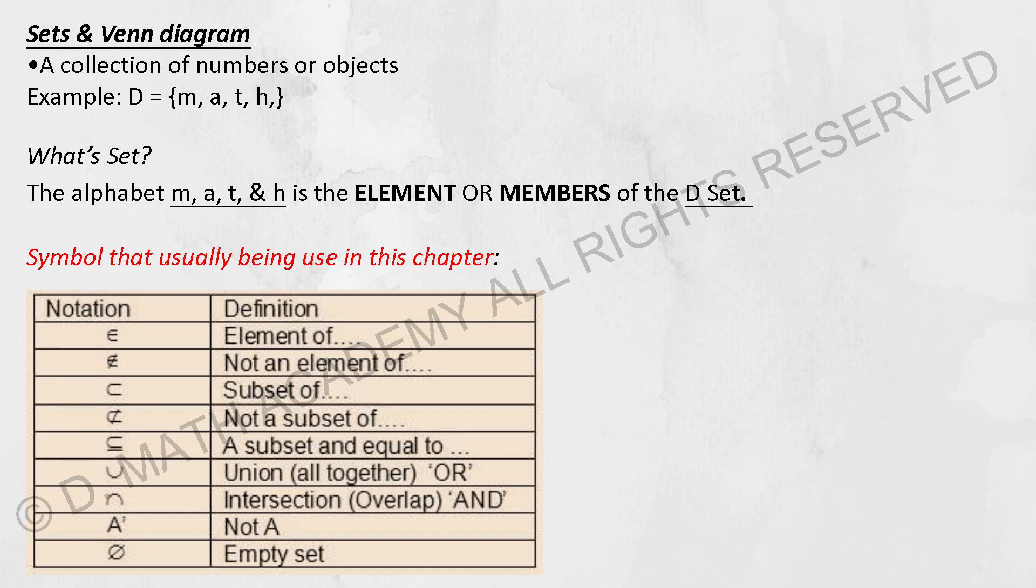So as listed over there, there's a couple of things that you need to know. The most common one will be EMPTY SET, UNION, INTERSECTION and the SUBSET part. Element has also been brought up lately. So these are the couple of lists that you need to take note.